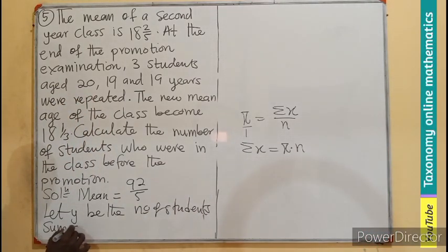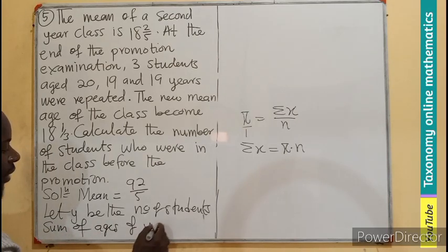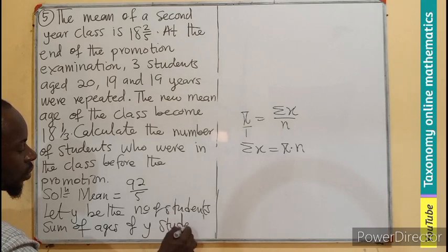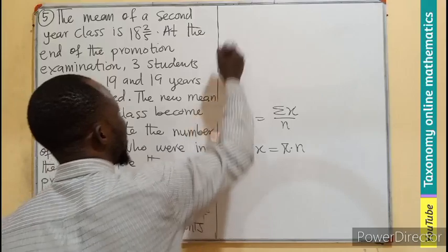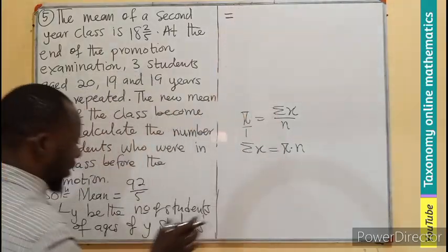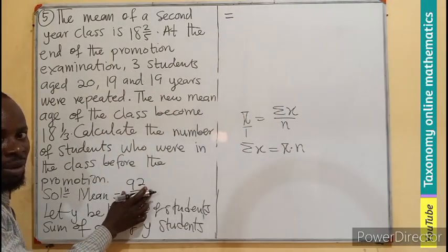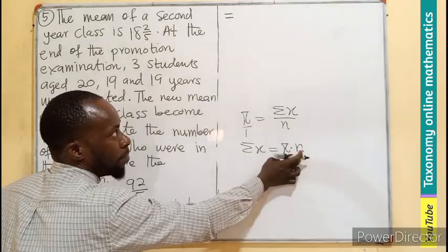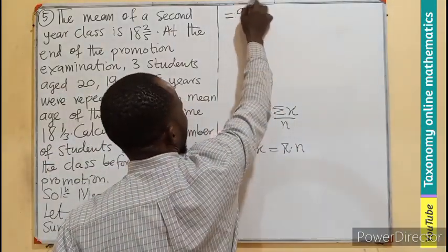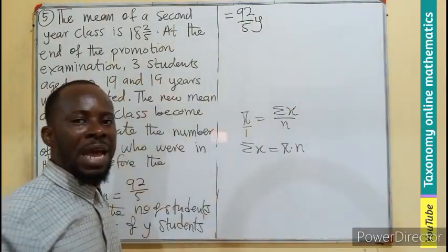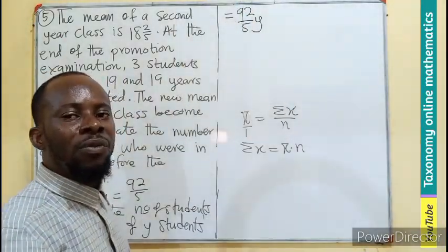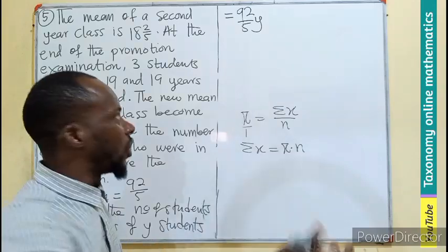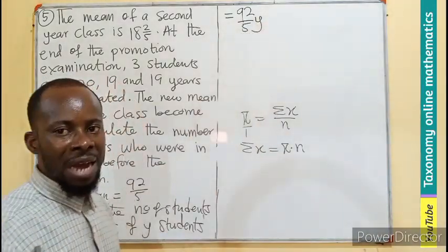Now I can find the sum of ages of Y students. That is going to be equals to the value of the mean times the number: 92 out of 5 times Y. So the sum of the ages before the promotion is this.